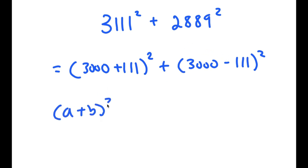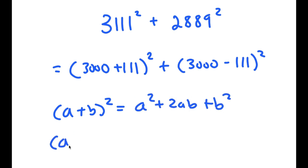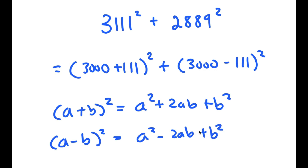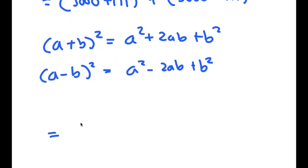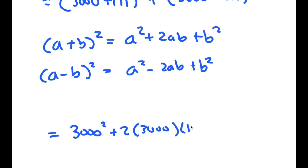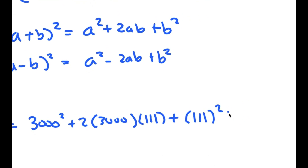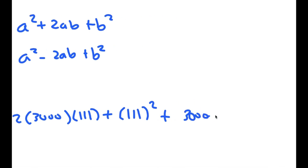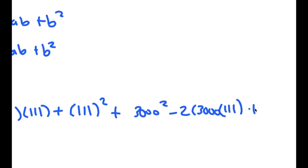If I have something in the form a plus b squared, this is equal to a squared plus 2ab plus b squared. And if I have something in the form a minus b squared, this is equal to a squared minus 2ab plus b squared. So 3,000 plus 111 squared is equal to 3,000 squared plus 2 times 3,000 times 111 plus 111 squared, and this plus 3,000 squared minus 2 times 3,000 times 111 plus 111 squared.